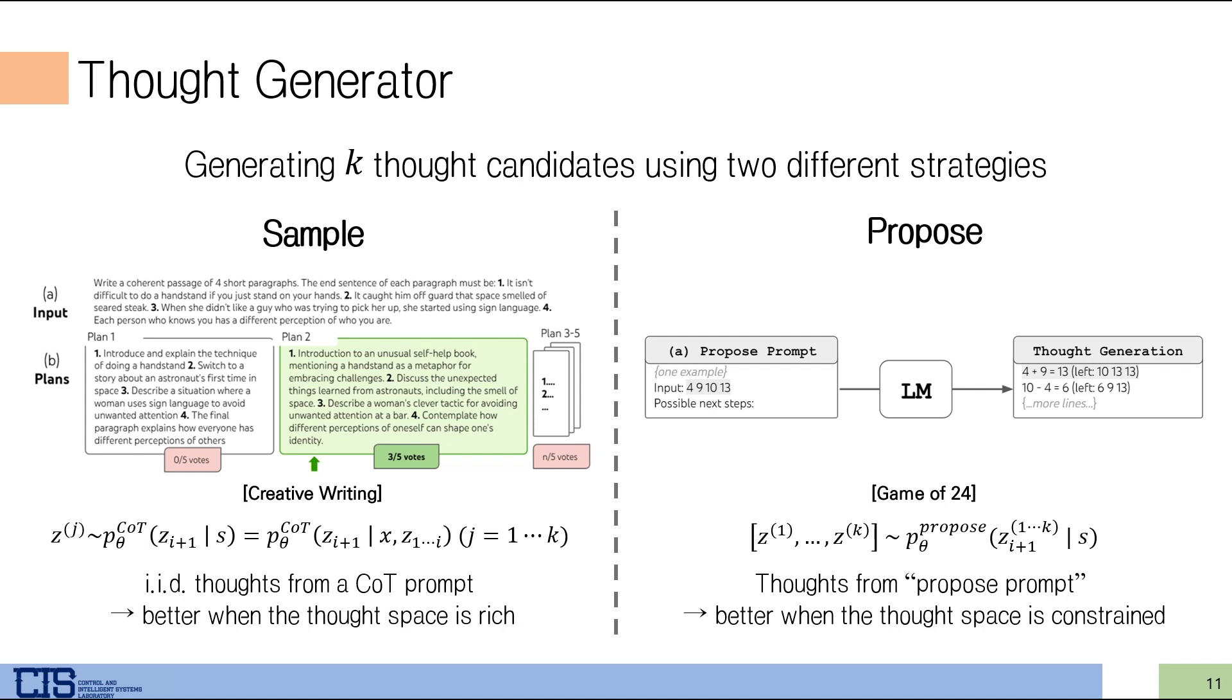At the thought generator, they generate K thoughts with two strategies. For problems that require rich thought space, they generate thoughts by sampling with CoT. If the thought space is constrained, such as when the calculation result or word component is decided, they generate thoughts with a proposed prompt.